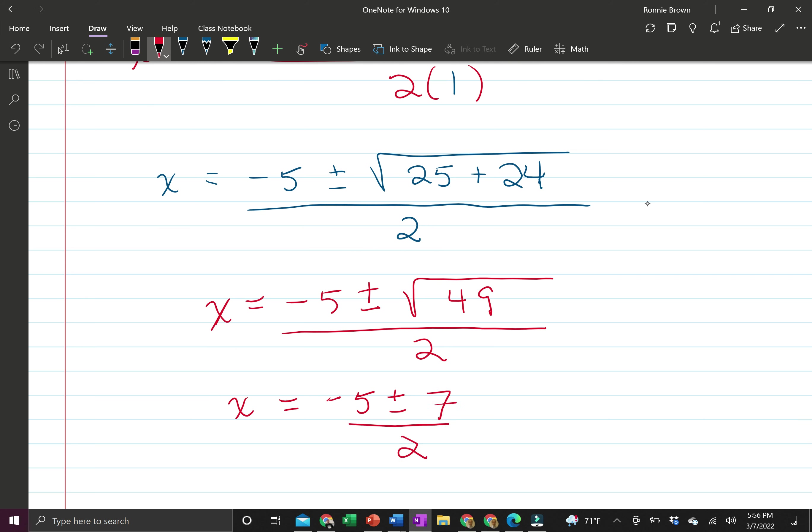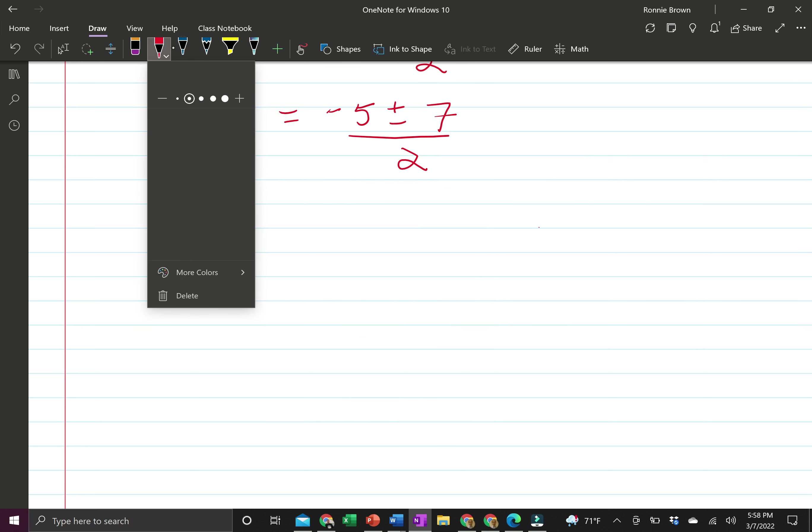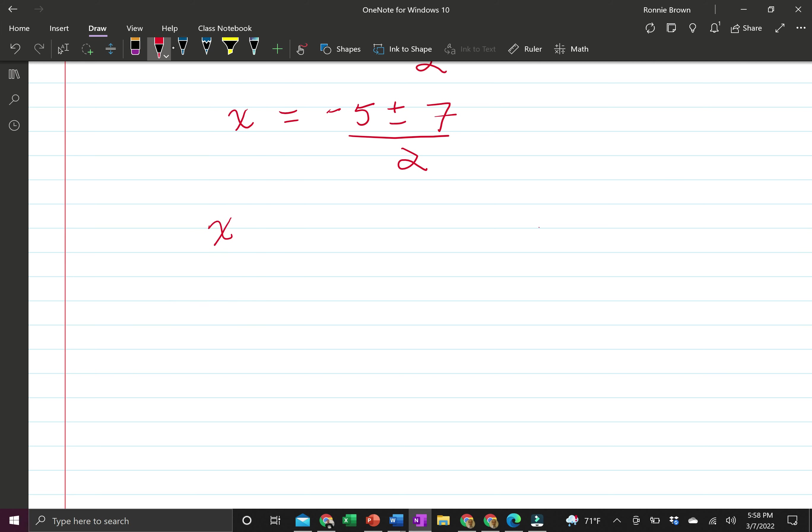Now what's left is for us to just split it up into two solutions. We have x equals negative 5 plus 7 over 2 and negative 5 minus 7 over 2. Negative 5 and a positive 7 just get us a 2, and that's still over 2. Negative 5 and a negative 7, signs are the same, so we add them and keep the same sign. That gets us negative 12 over 2. We know that 2 over 2 is 1, and negative 12 divided by 2 gets us negative 6.